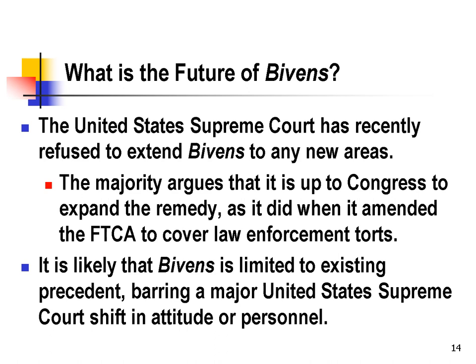The United States Supreme Court has recently said that it will not expand Bivens to any new areas. The majority has argued that Congress can expand the Federal Tort Claims Act if it chooses to, and Congress's inaction in expanding the Act in new areas represents a congressional policy that there shouldn't be compensation in these areas. This has been particularly troublesome in recent cases involving issues such as cross-border shootings and the unavailability of the Bivens remedy. It's likely that Bivens will be kept to existing precedent unless there's a major shift in the Supreme Court's views or personnel.